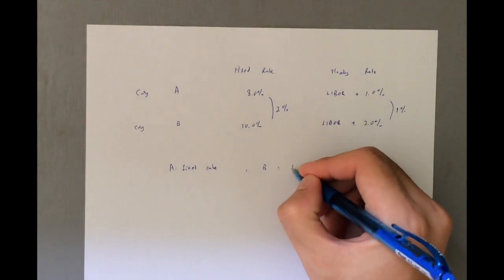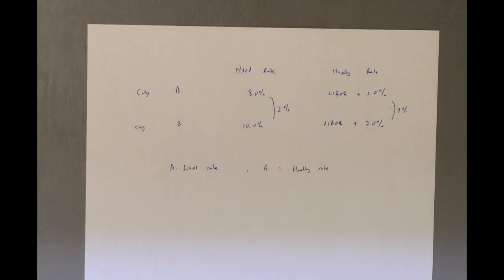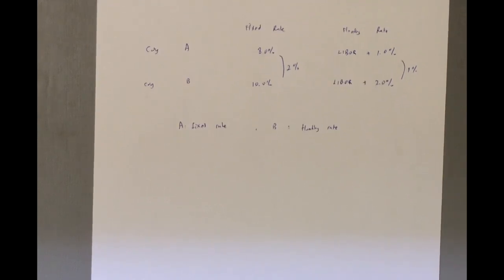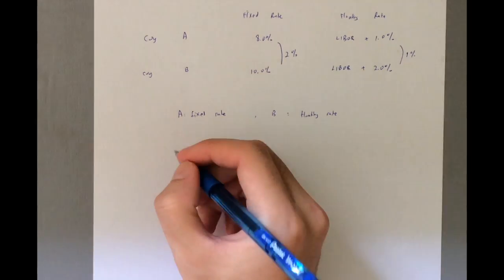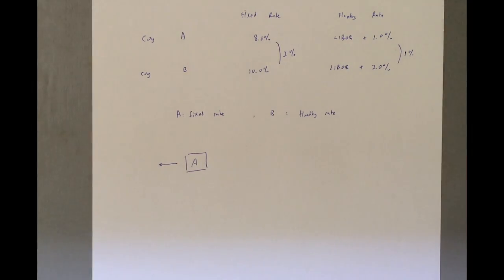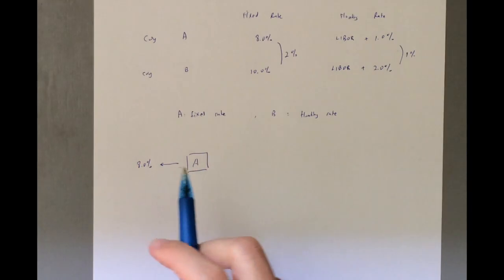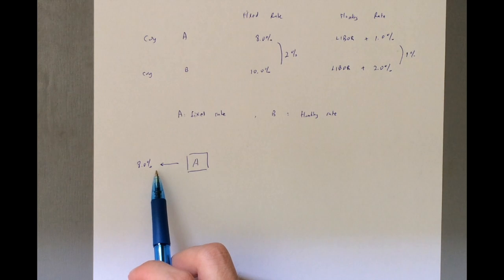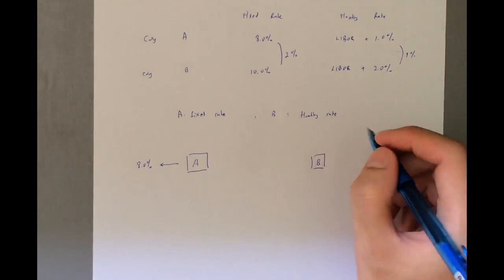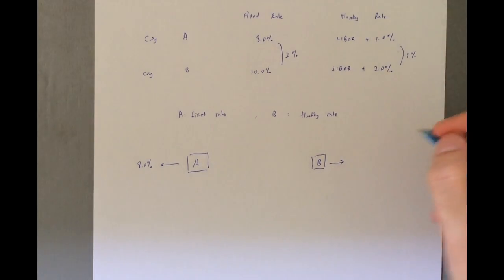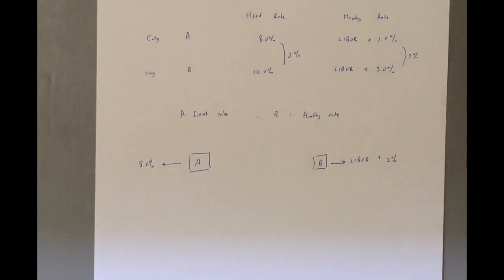Okay, so we need to set the stage right. So currently, A, since it's better off paying a fixed rate, it is going to pay, it's going to borrow 8%, and every month will be given out. And B, since it has an advantage in LIBOR, that is going to pay LIBOR plus 2%.